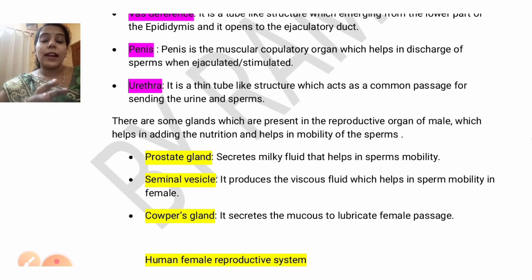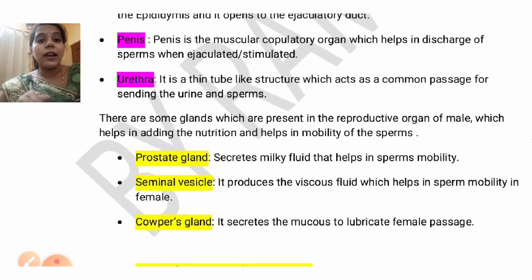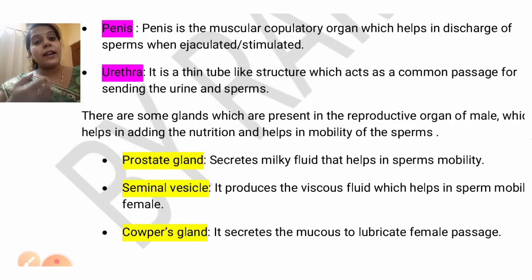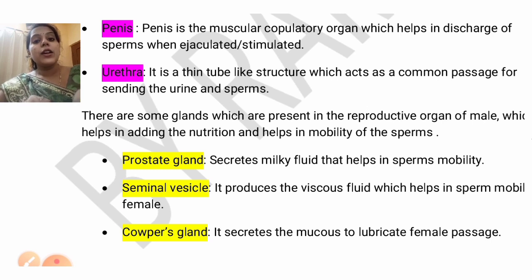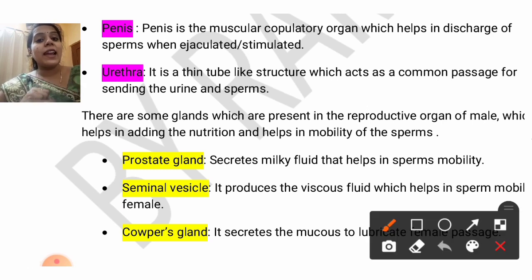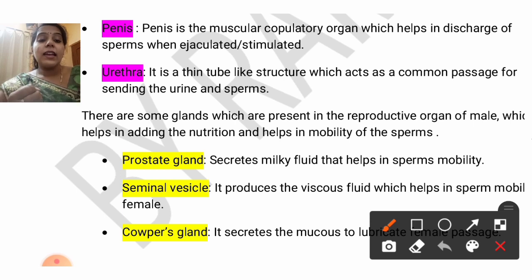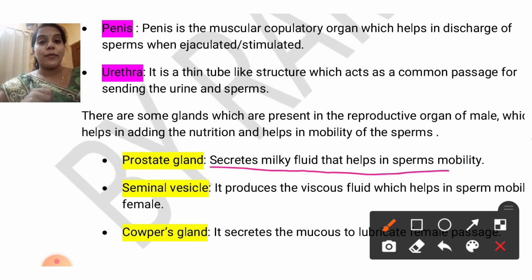You also have to understand about the glands — very, very important. The prostate gland and seminal vesicle are asked frequently. The prostate gland is a gland that secretes a milky fluid that helps in the sperm's mobility.